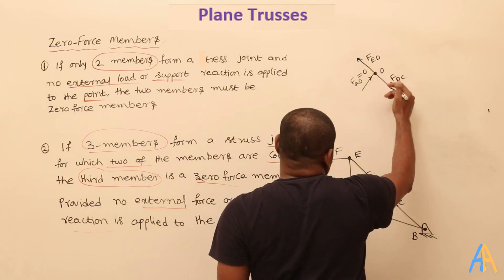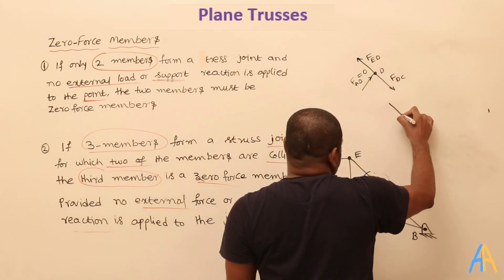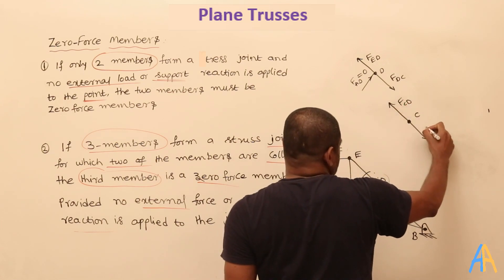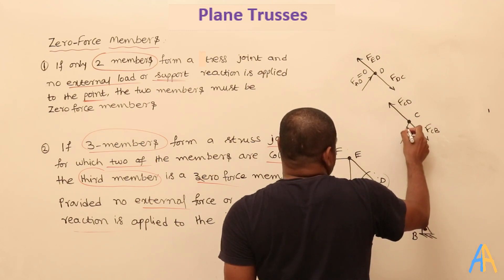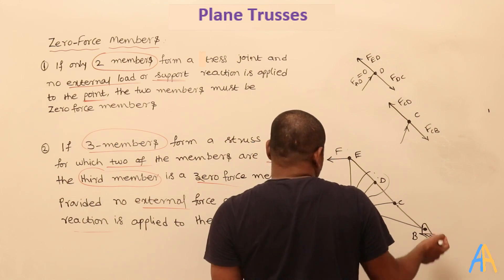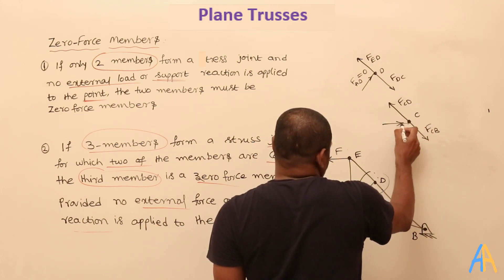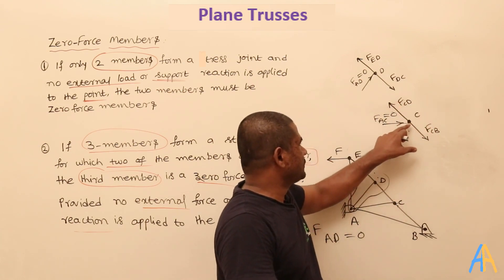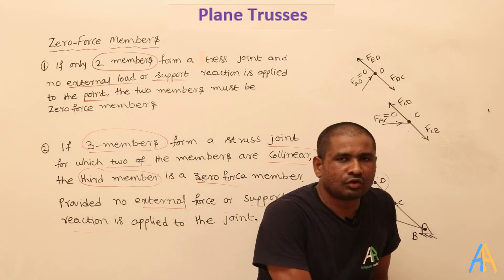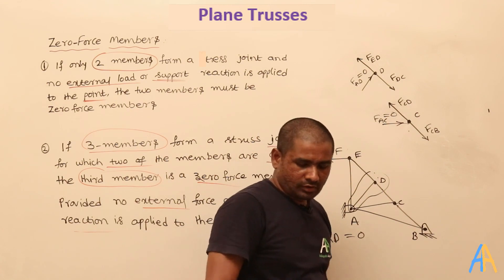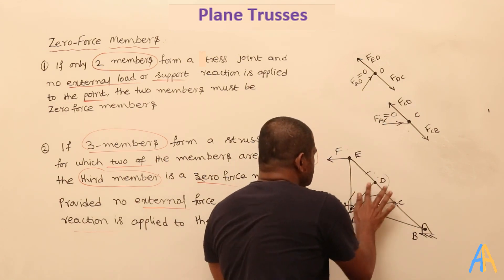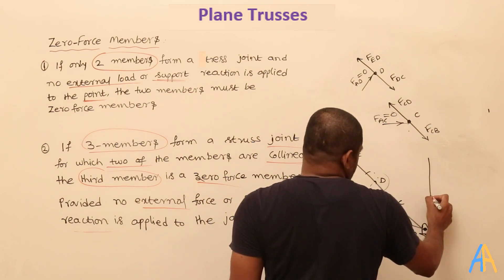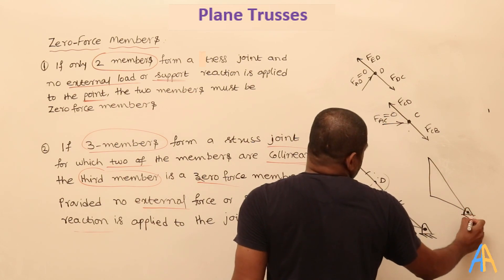At joint C, F_CD and F_CB are collinear, and the third member F_AC is the inclined one — so F_AC equals zero. This does not need to be at 90 degrees; any angle applies. Because these members are zero force members, we can remove them. The equivalent structure has the zero force links removed, and there is no structural difference between the two representations.